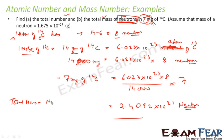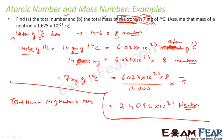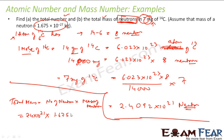Total mass = number of neutrons × mass of one neutron. Number of neutrons = 2.4×10²¹, and mass of one neutron = 1.675×10⁻²⁷ kg. Multiplying both gives 4.03×10⁻⁶ kg. That is the answer for total mass of neutrons.